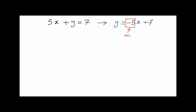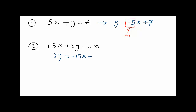Another example: 15x plus 3y equals -10. Solving for y: 3y equals -15x minus 10, then dividing all terms by 3 gives y equals -5x minus 10/3. The slope of this line is also -5.